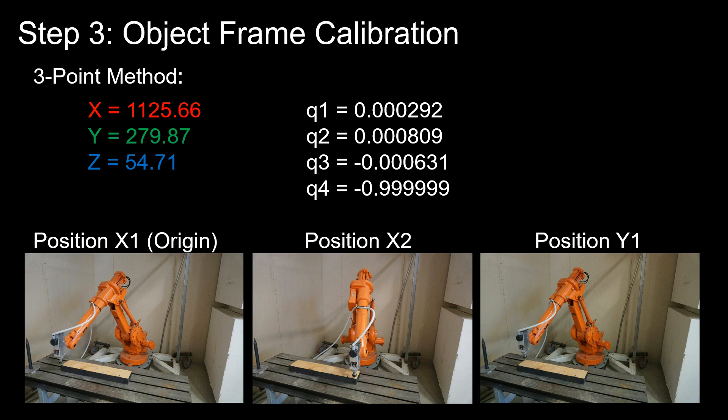The results here are 1125.66 millimeters in the X direction. That's the distance from the corner of the table to the origin of the object in the X direction. We see here the quaternion Q1 to Q4. This is close to 0, 0 and minus 1 at Q4. Which means that we have rotated the object frame approximately 180 degrees relative to the user frame.